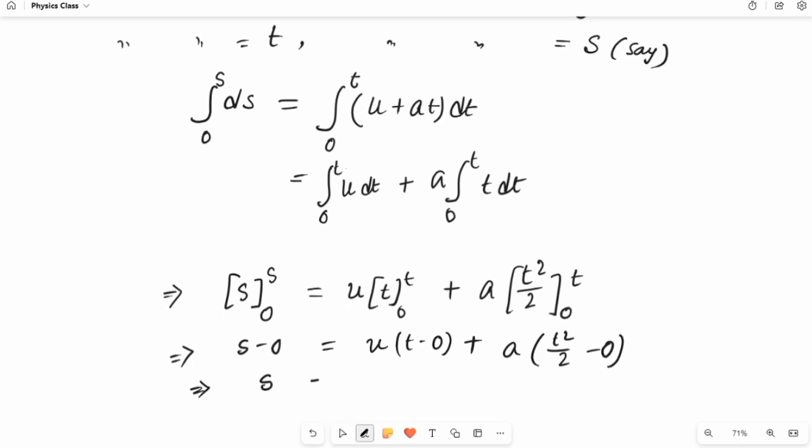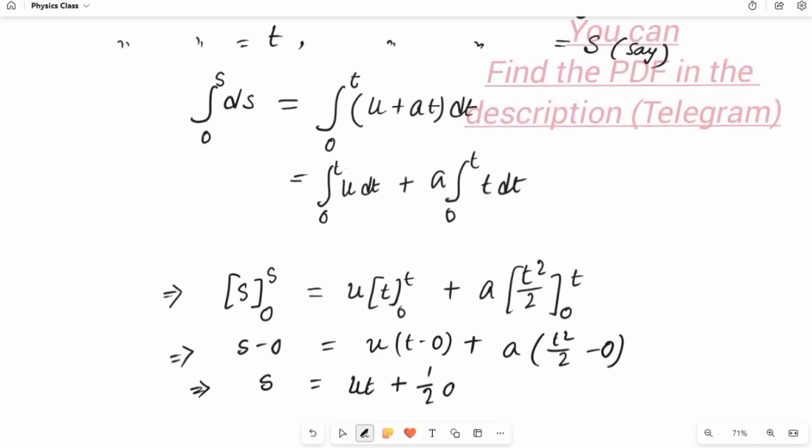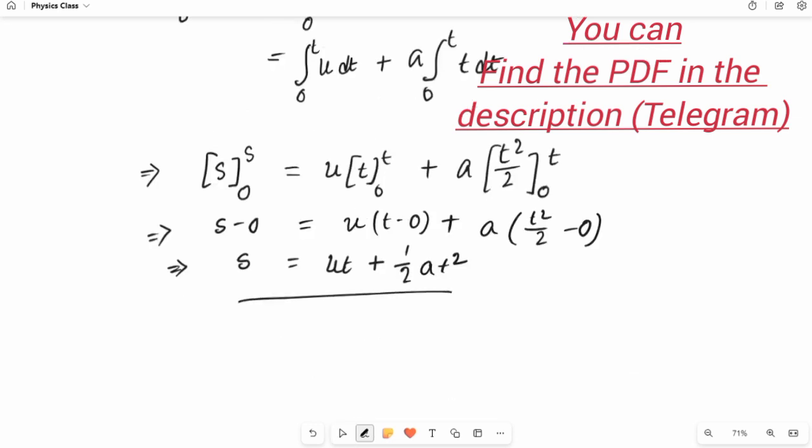And it will be s equals ut plus a t squared by 2. So this is our second equation of motion. Thanks for watching.